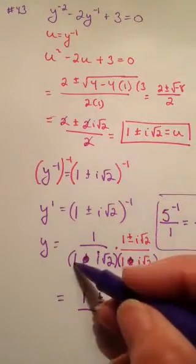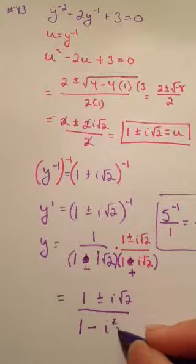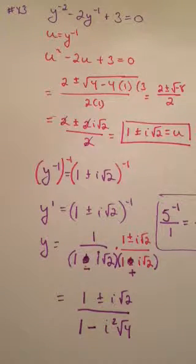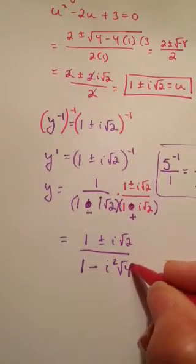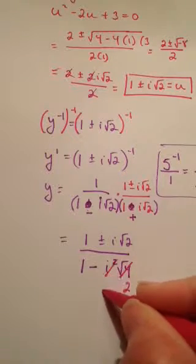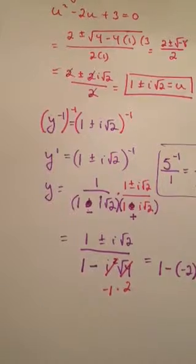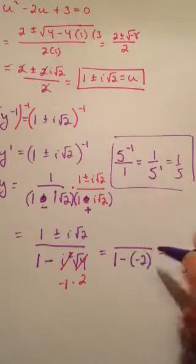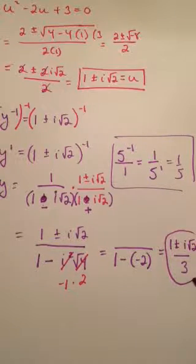When we multiply by the conjugate, it's the first two terms: 1 times 1 is 1. And the second two terms: minus i squared root 4. Be careful — i times i is i squared, and root 2 times root 2 is the square root of 4. Simplifying: root 4 becomes 2, and i squared becomes negative 1. So I have 1 minus negative 2, which becomes positive 3. So my denominator is positive 3, and on the top I have 1 plus or minus i root 2. That is my final answer.